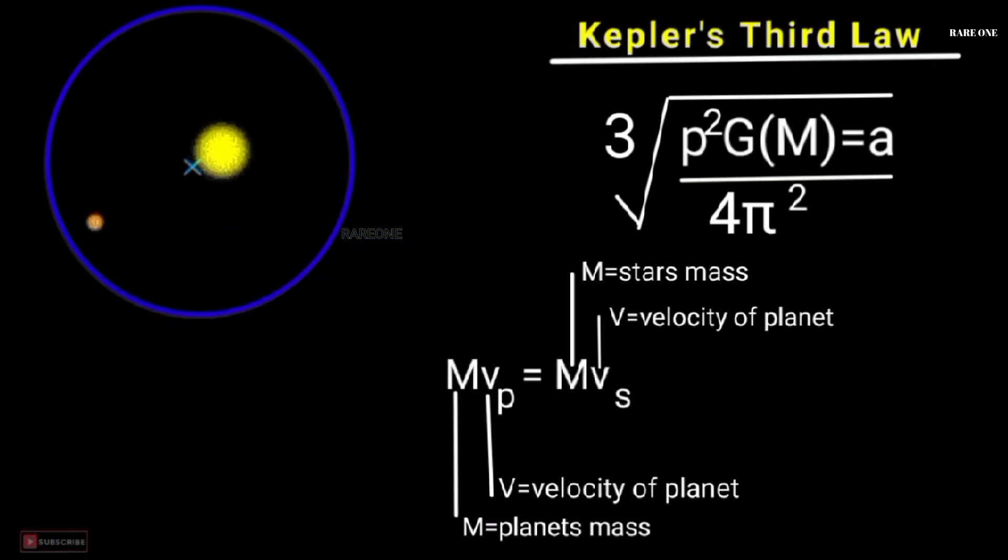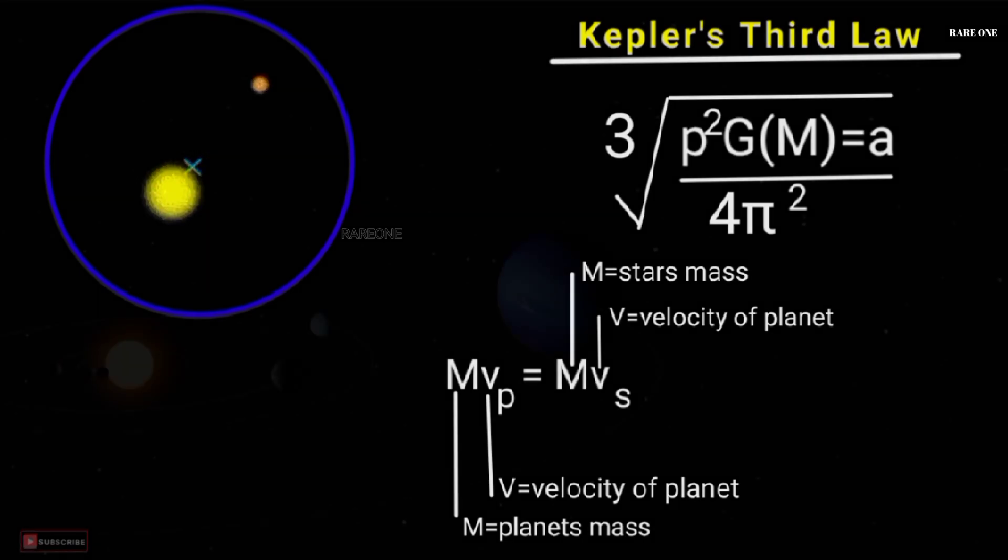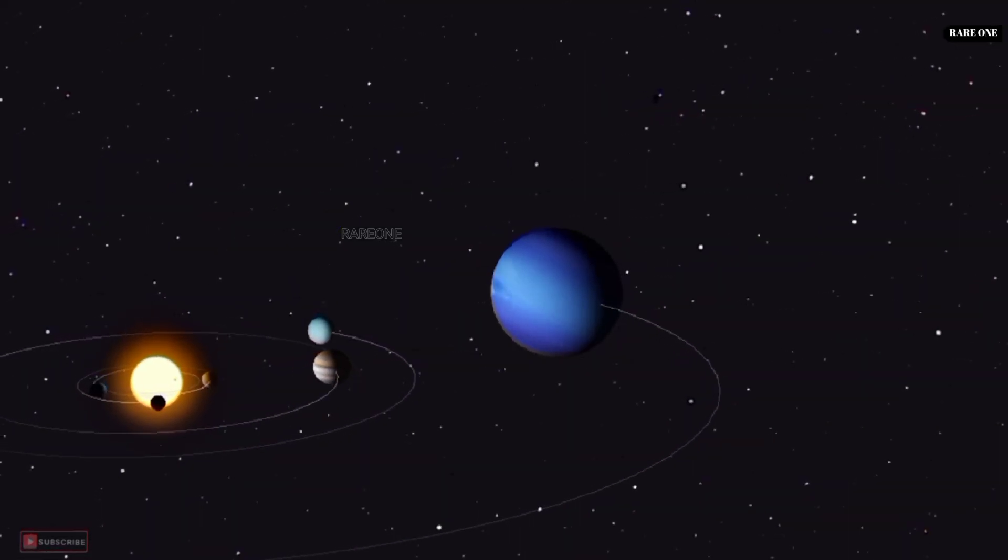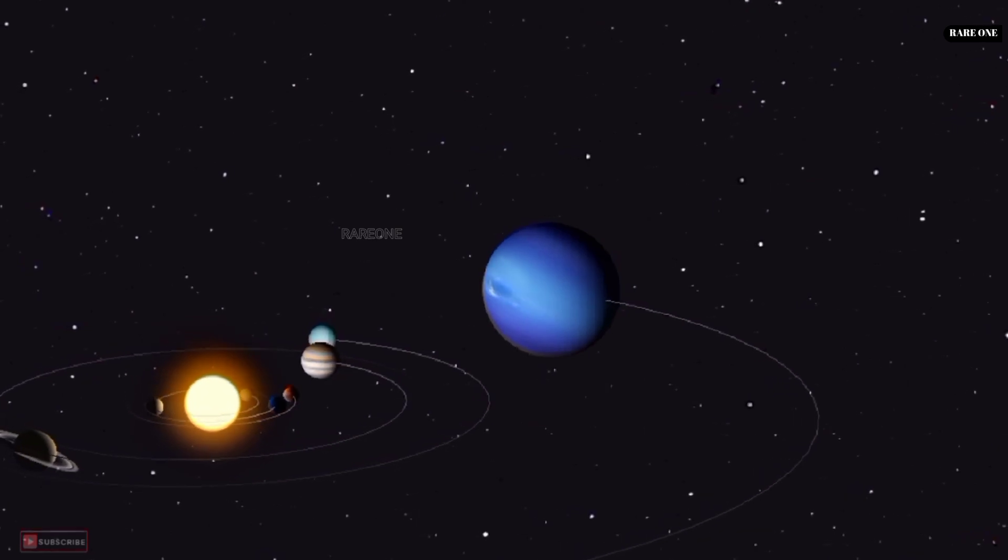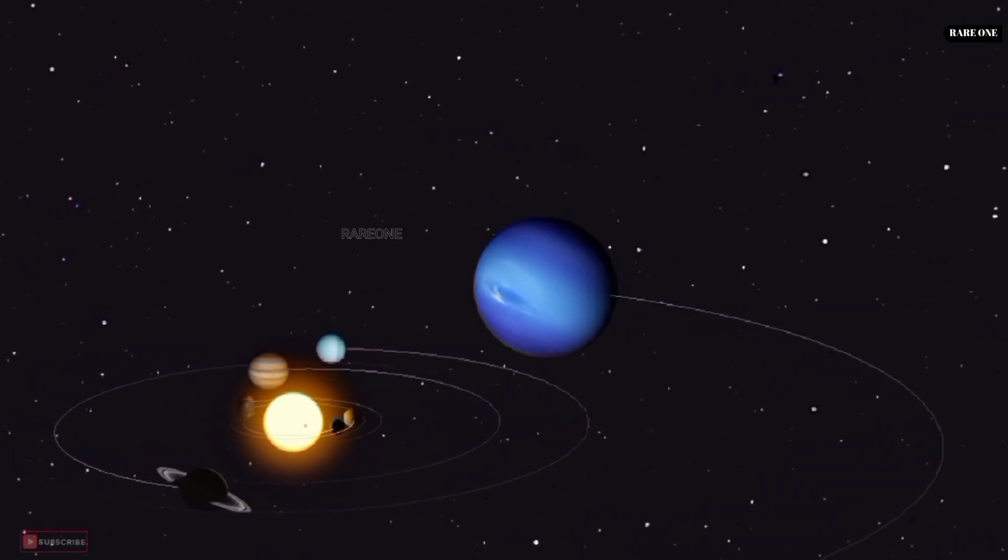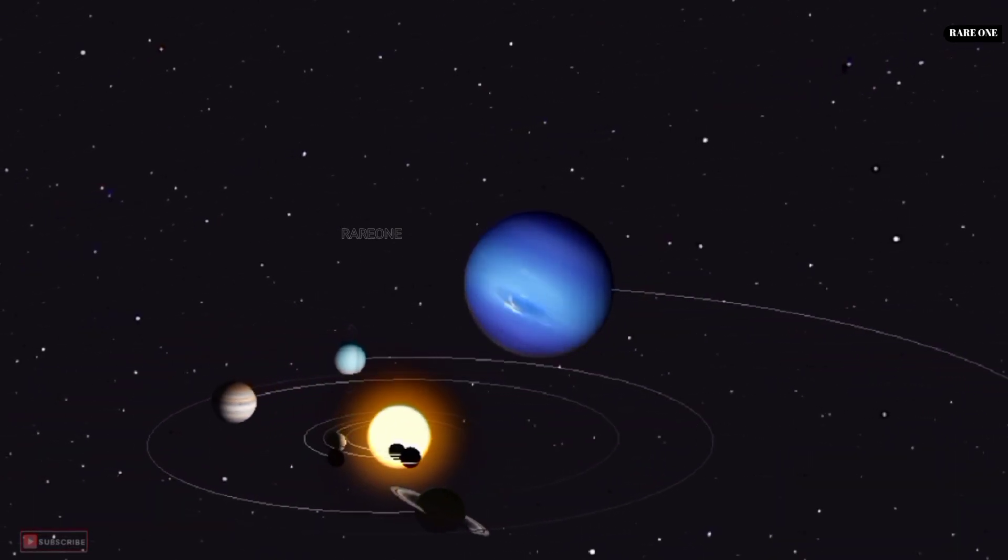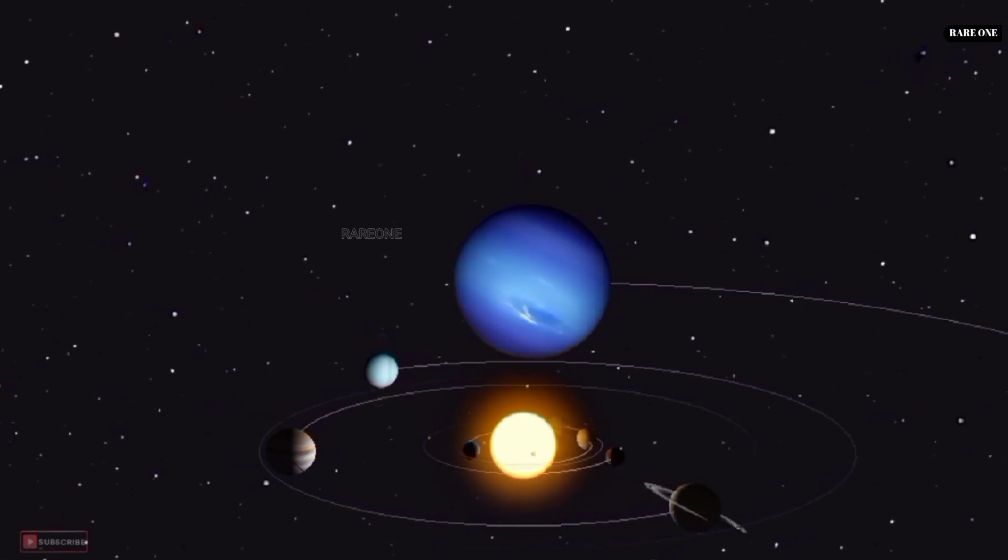Neptune was the first planet discovered through mathematical calculations rather than direct observations. In the early 19th century, astronomers noticed peculiarities in the orbit of Uranus that suggested the gravitational pull of an undiscovered planet.